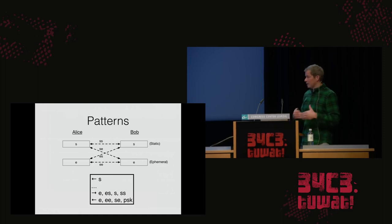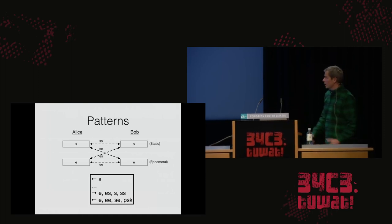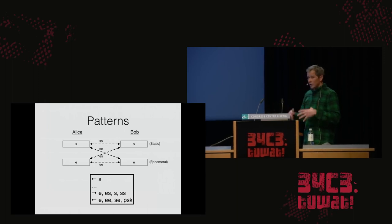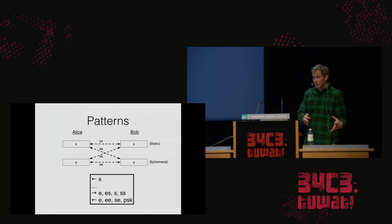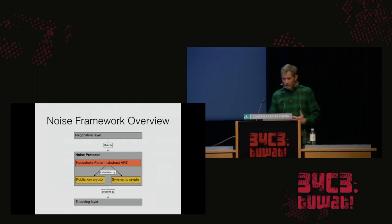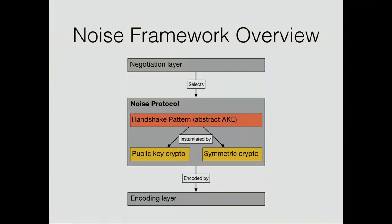That's an example of how we can take this fairly simple language, extend it with new features, and we're interested in continuing that process. Things in the mix include figuring out how to add post-quantum-resistant algorithms to provide hybrid forward secrecy, and even adding signatures back into this framework. Just like all this machinery is good for DH-based protocols, probably we can take these notions of patterns, Noise Protocols, and our negotiation approach and apply them to more conventional AKEs and other things as well.